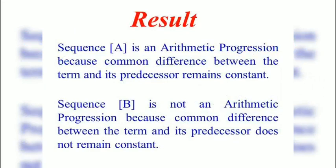Result: Sequence A is an arithmetic progression because common difference between the term and its predecessor remains constant. Sequence B is not an arithmetic progression because common difference between the term and its predecessor does not remain constant.